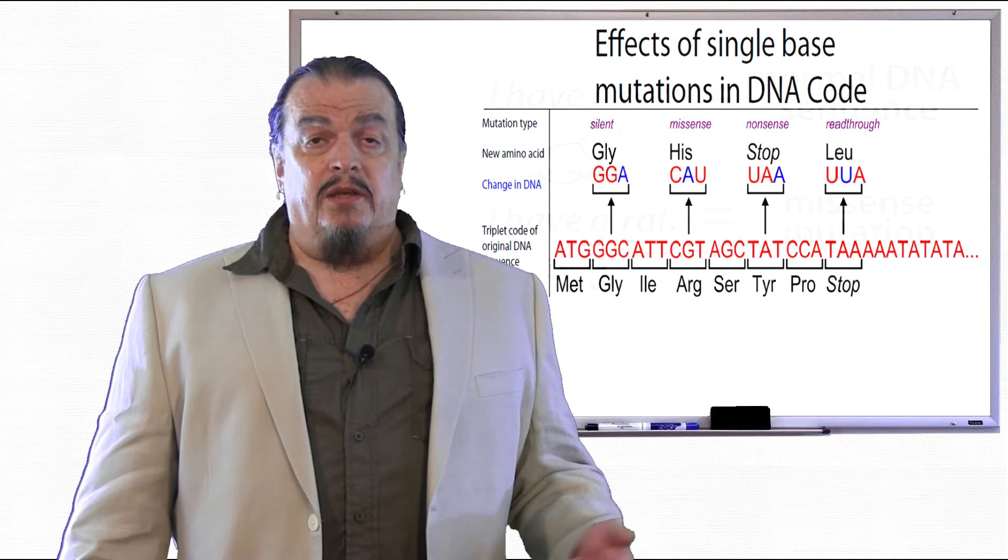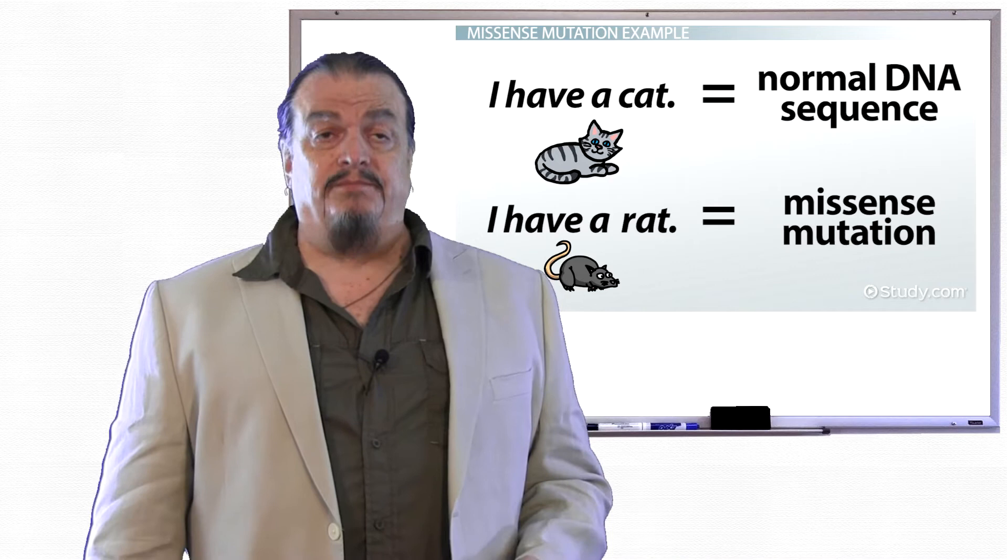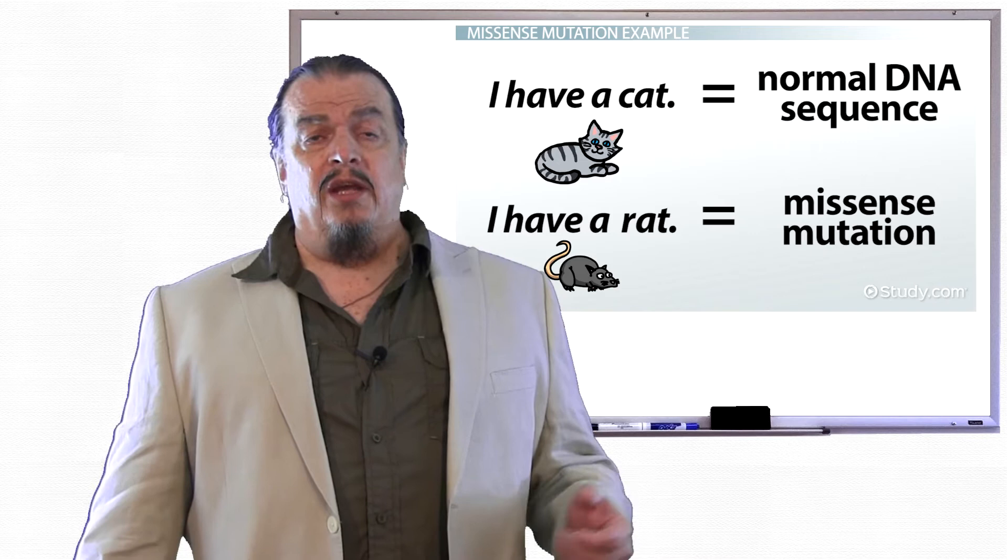Like, if you change the letter C in cat to an R, it becomes rat, which is a totally different animal. Of course, point mutations like missense mutations are not going to make a total change like that, but the changes can be significant.